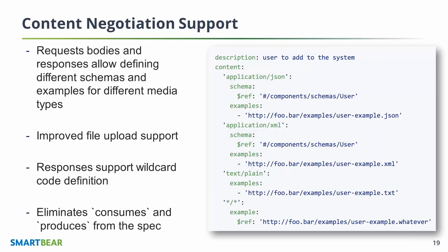The same thing applies to responses. In the same way, we eliminated the produces field. In responses, you can also specify different media types and different examples. One other addition to responses is response code ranges — where before you could only specify specific response codes, now you can define ranges like everything under 300 or everything under 400, which is useful for specifying something more generic.